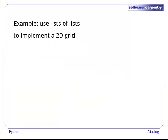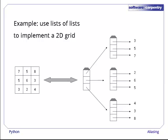As an example, let's look at how we might use lists of lists to implement a two-dimensional grid. A single outer list serves as the spine of the structure, while each row of values is stored in a sublist.